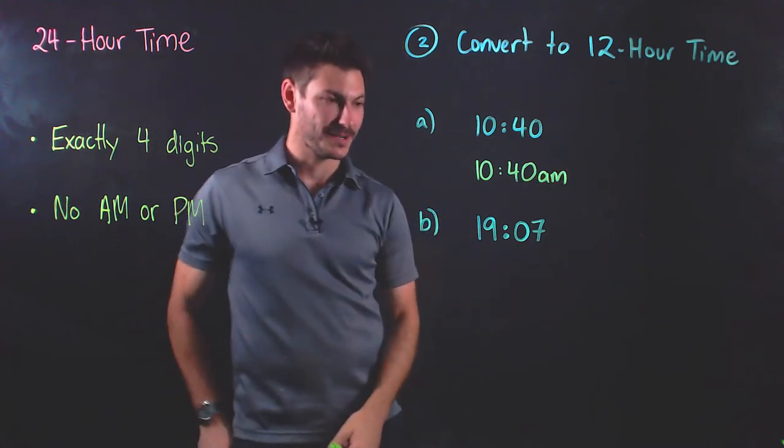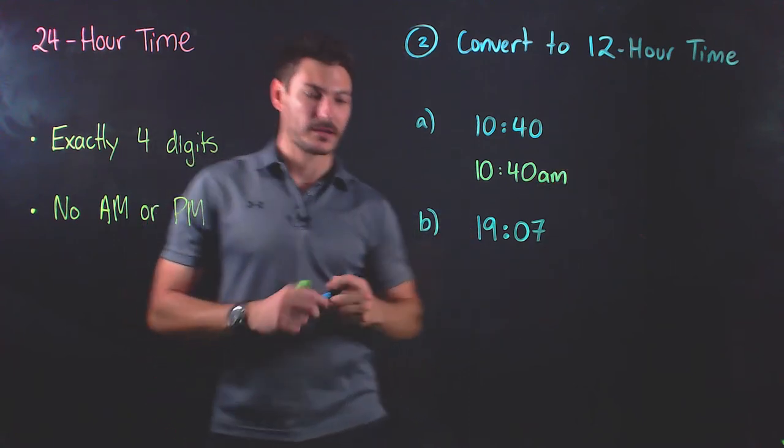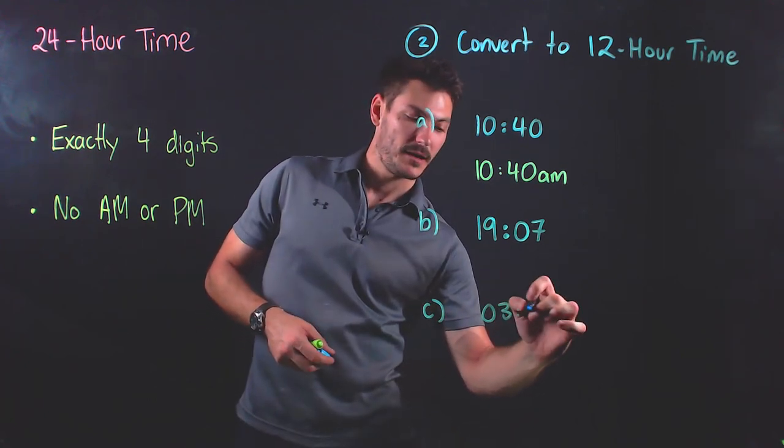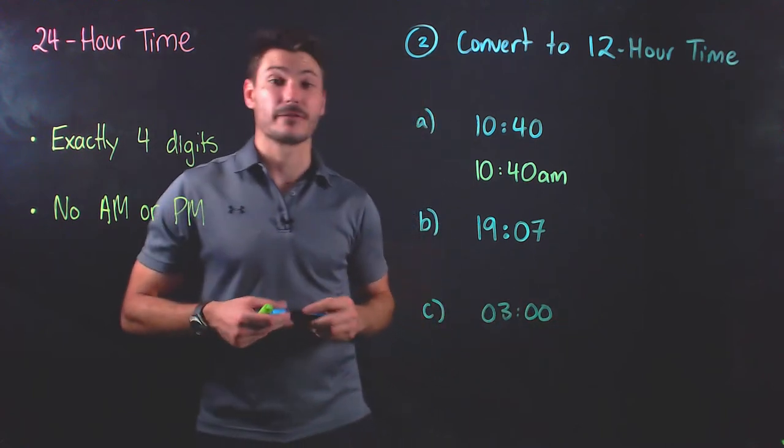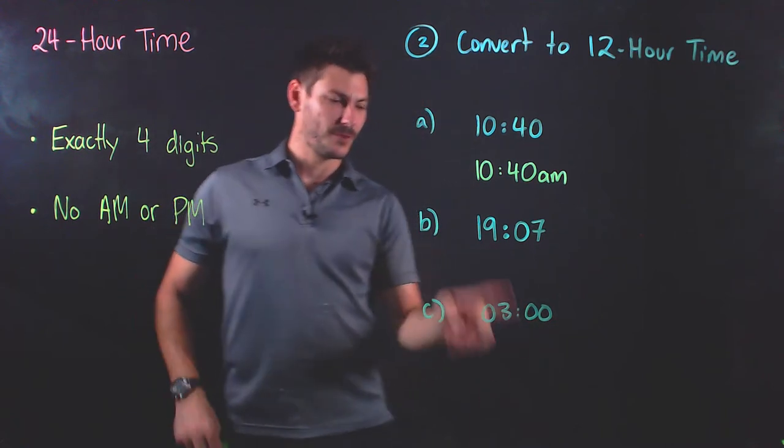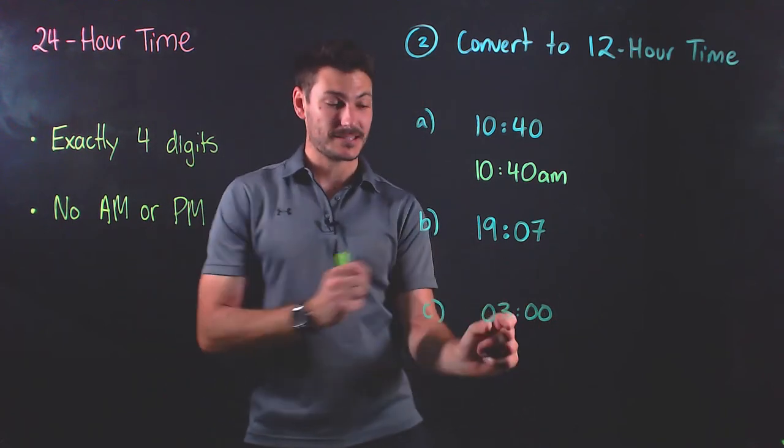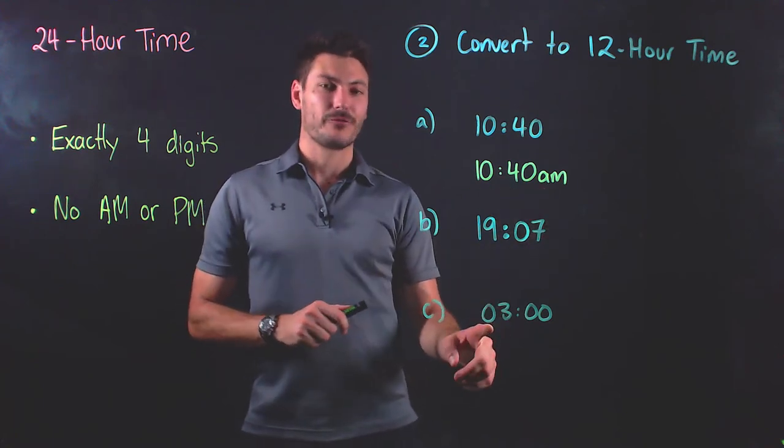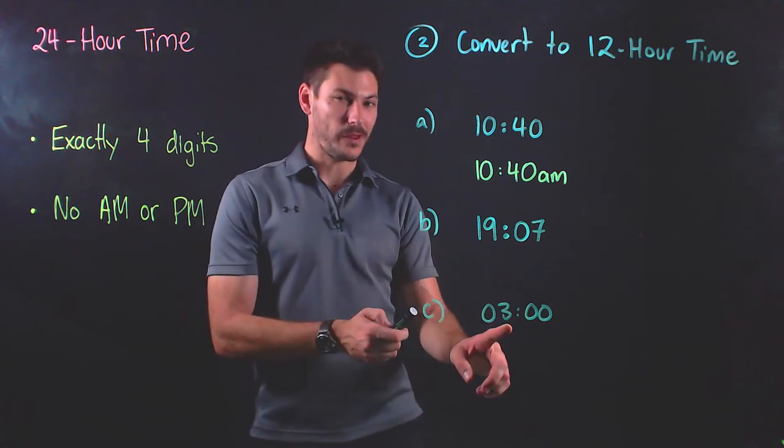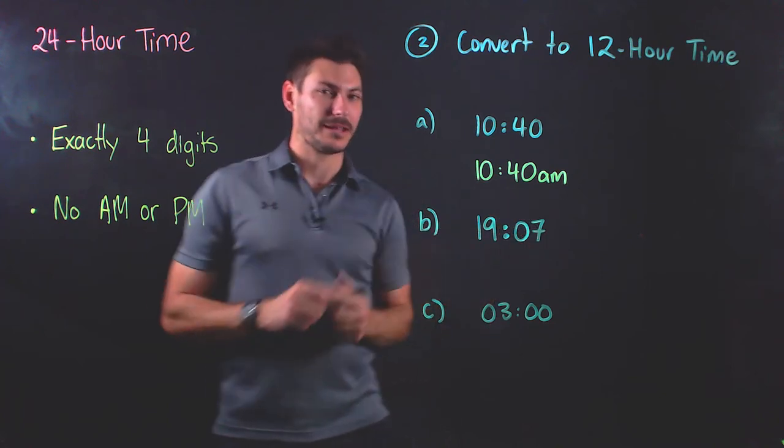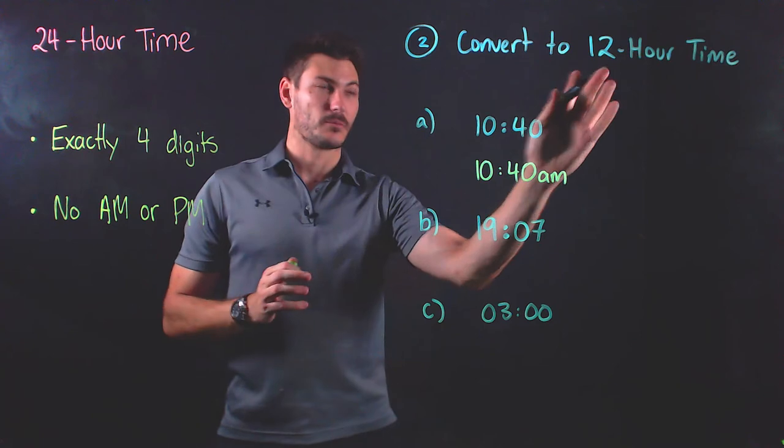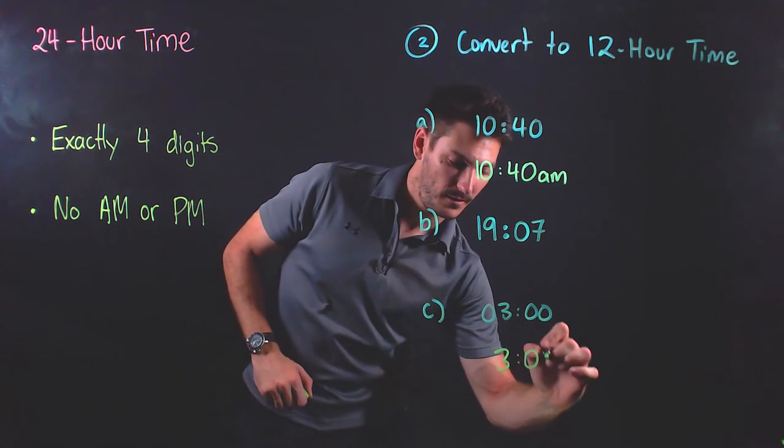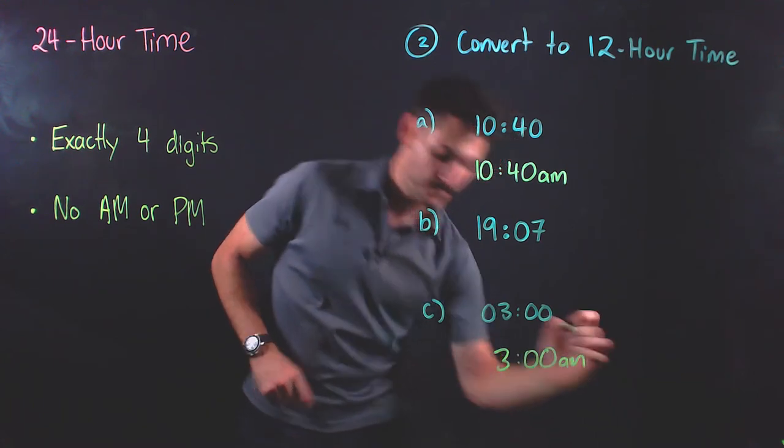I'm gonna do a bonus question. Actually, I'm gonna do part C here because I want to point out one extra thing. Part C, we're gonna convert 0300, 0300 flat. In this case, we don't write it exactly as it is. Yes, it is less than 12, which is important, so we know it's an a.m. However, we're not gonna write this 0. We know it's 3 a.m. but in 12-hour time, we don't write the initial 0. So we just write 3 a.m. for that one.